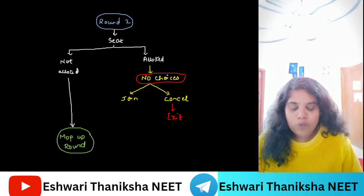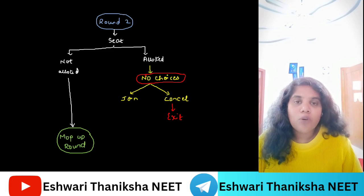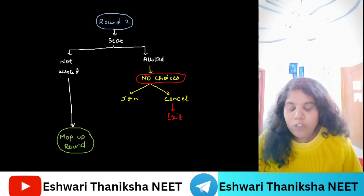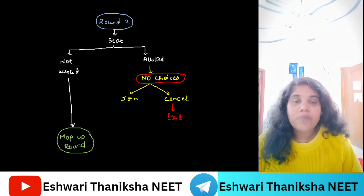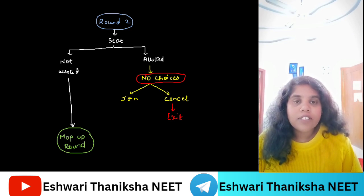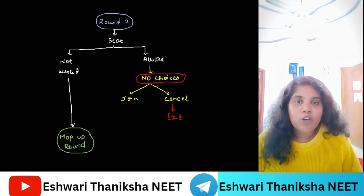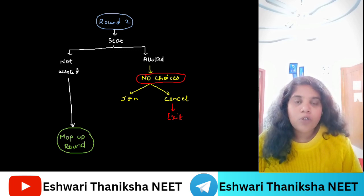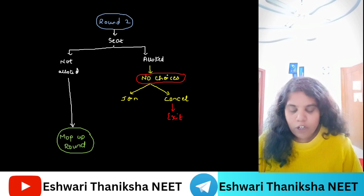In Round 2 students, again if a seat is allotted or not allotted to you, we will see. If a seat is not allotted to you in Round 2, then you can participate in the Mop-Up Round. Note here: if you want to participate in the Mop-Up Round, you should not have been allotted a seat in Round 1 and Round 2 — a seat must not have been allotted in either round. Only then you can participate in the Mop-Up Round.